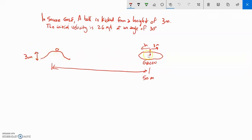The ball is kicked from three meters higher than the green is. The kick is made from an initial height of three meters at an angle of 30 degrees, and the initial velocity is going to be 26 meters per second.